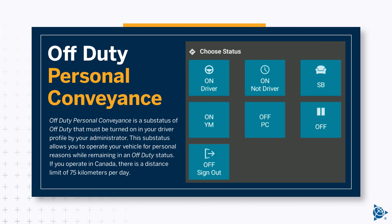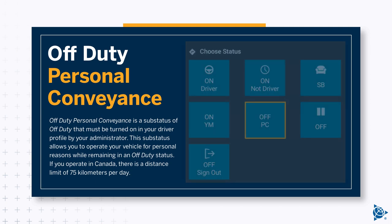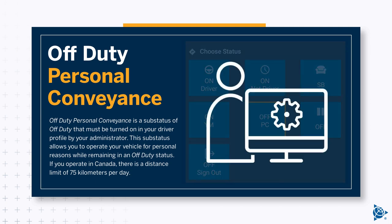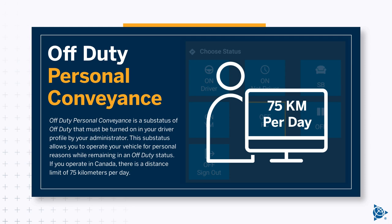Off-duty personal conveyance is a sub-status of off-duty that must be turned on in your driver profile by your administrator. This sub-status allows you to operate your vehicle for personal reasons while remaining in an off-duty status. If you operate in Canada, there is a distance limit of 75 kilometers per day.